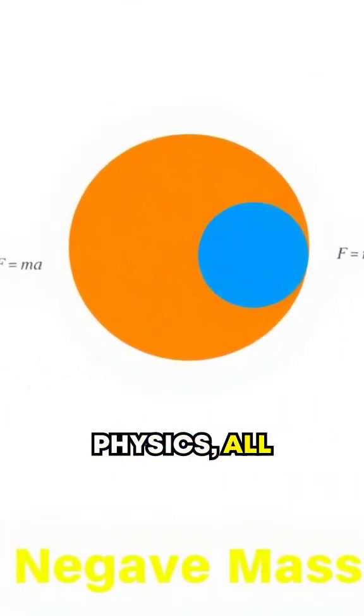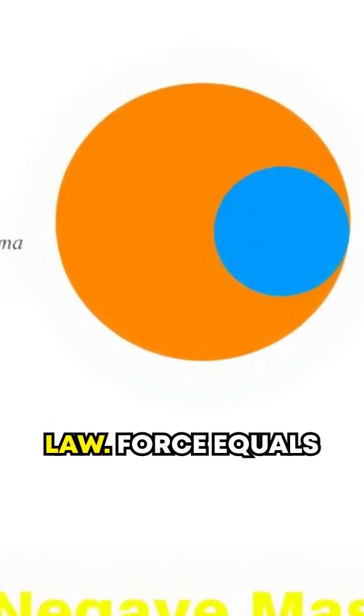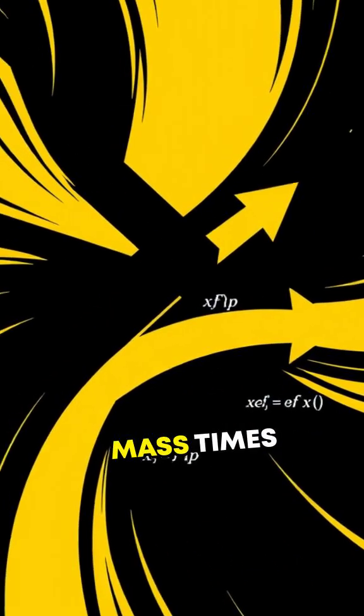In classical physics, all objects have positive mass, meaning they adhere to Newton's second law: force equals mass times acceleration.